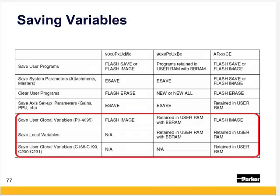What about saving variables? For the flash-based ACR9000, the global variables P0 to P4095 require a flash image to store these parameters. Making an inline program edit in the terminal window won't be retained unless you do a flash save before powering down. Access parameters such as gains and PPU are saved with an e-save.